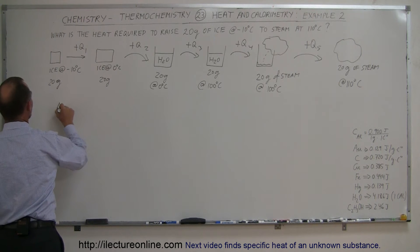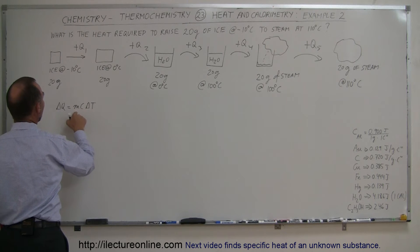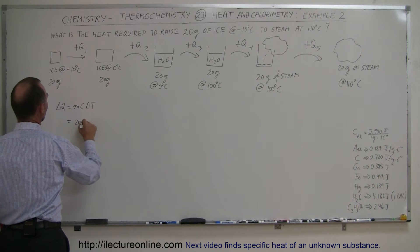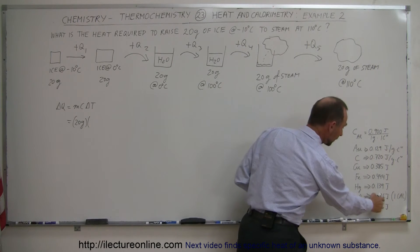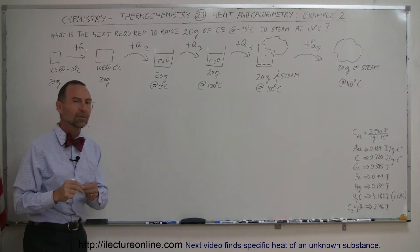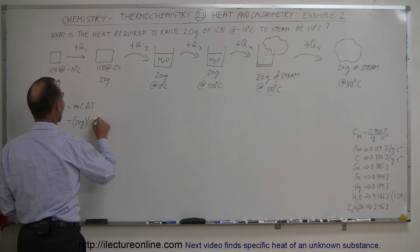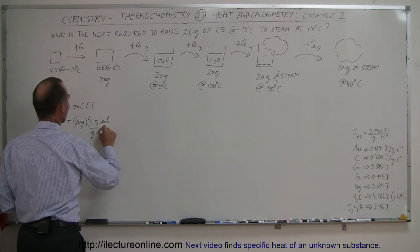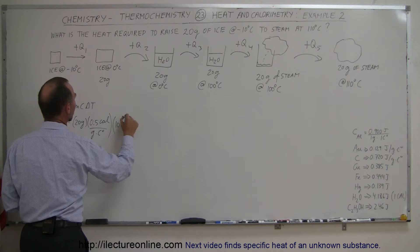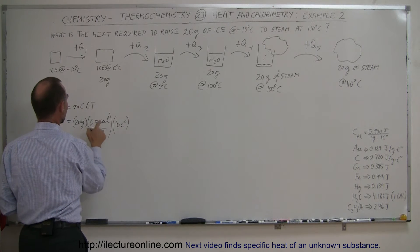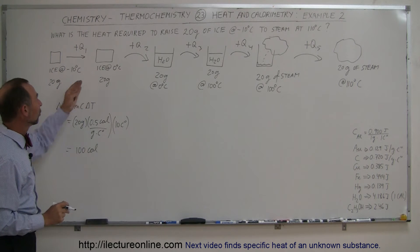First step: Q1 equals MC delta T. The mass of the ice is 20 grams. The specific heat of ice is only half that of water, which turns out to be 0.5 calories per gram per centigrade degree. The change in temperature from minus 10 to 0 is 10 centigrade degrees. So this ends up being 20 × 0.5 × 10 = 100 calories of heat required to take the ice from minus 10 to 0.